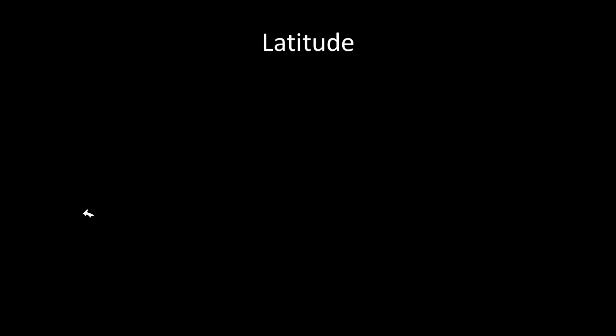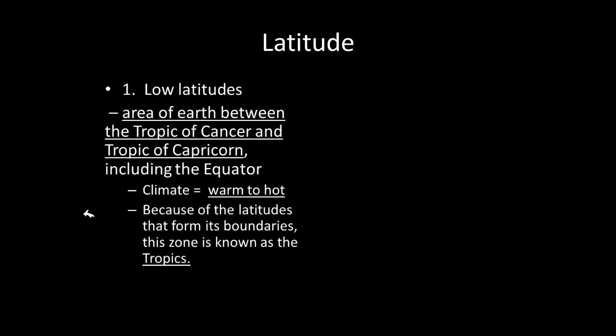Let's go to the first one: latitudes. These are the lines of latitude that start from the equator, going north and south of the equator — it's a way of measuring distance. We want to focus on the low, mid, and high latitudes. The low latitudes are the area between the Tropic of Cancer and the Tropic of Capricorn, that middle part of the earth that includes the equator.